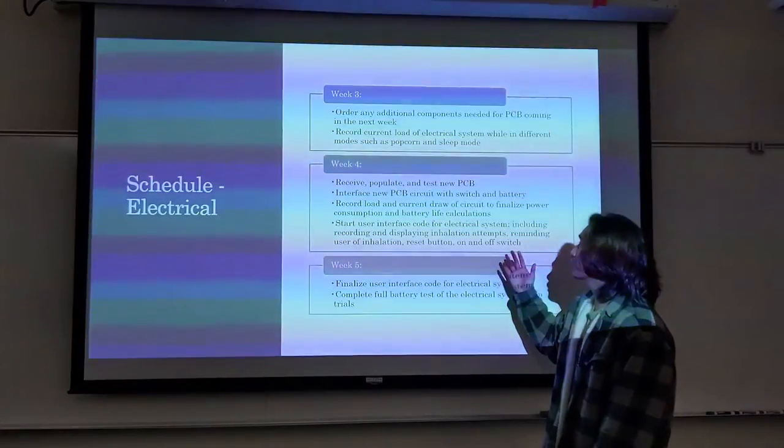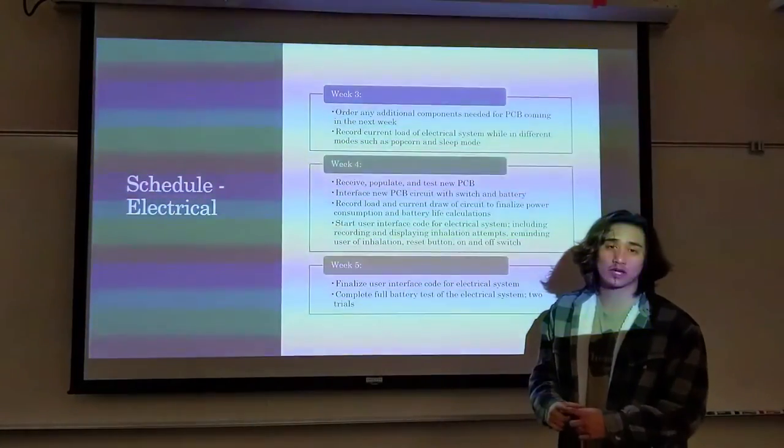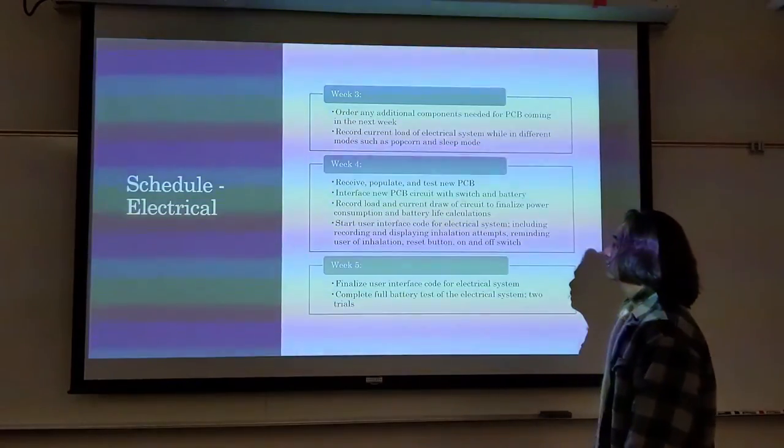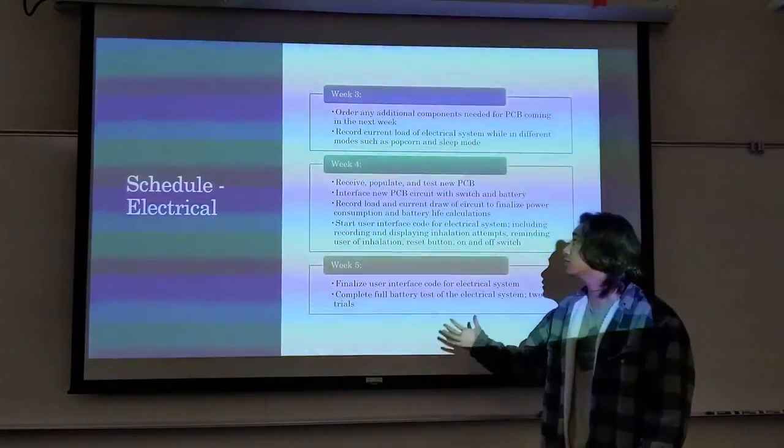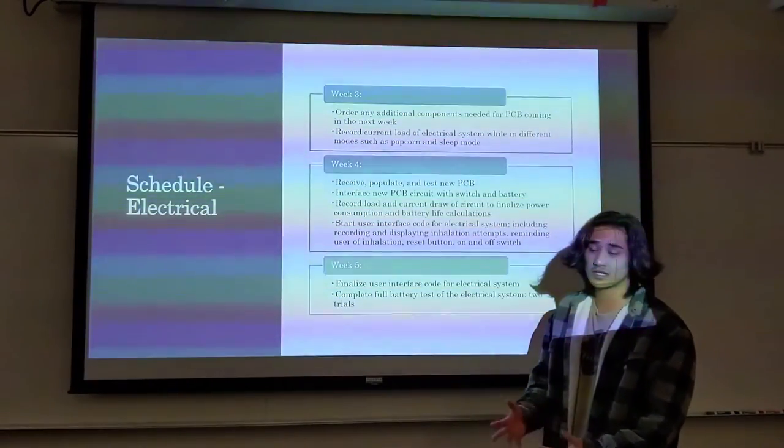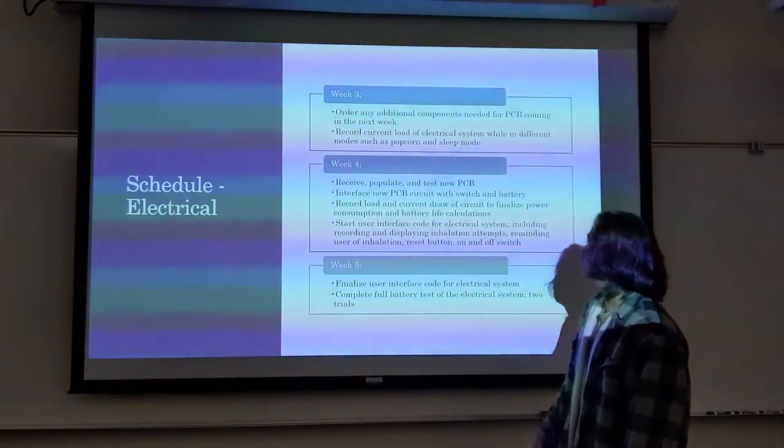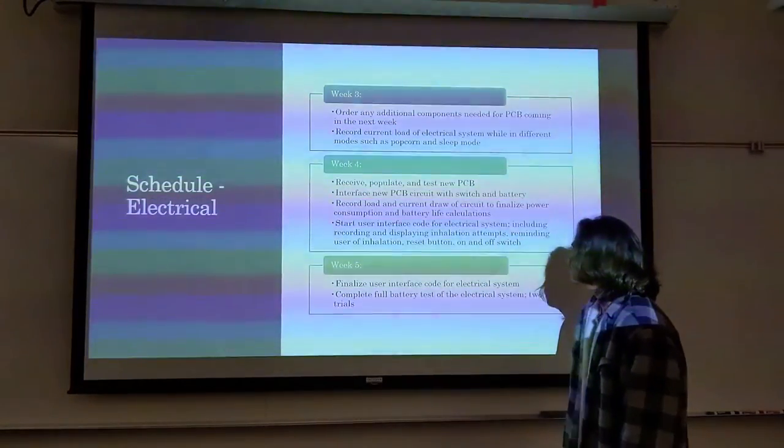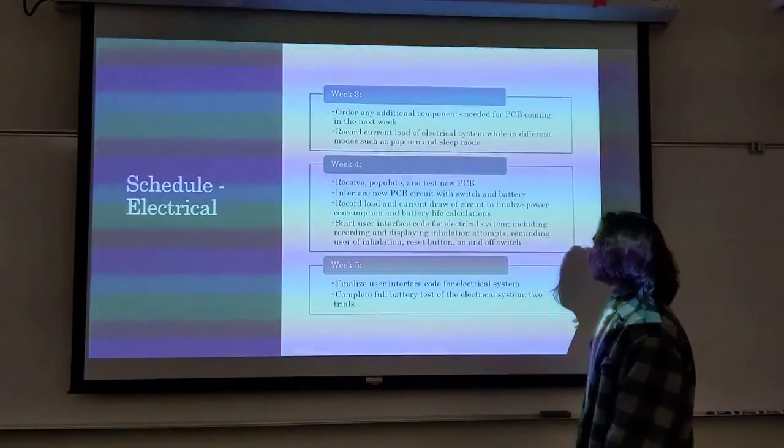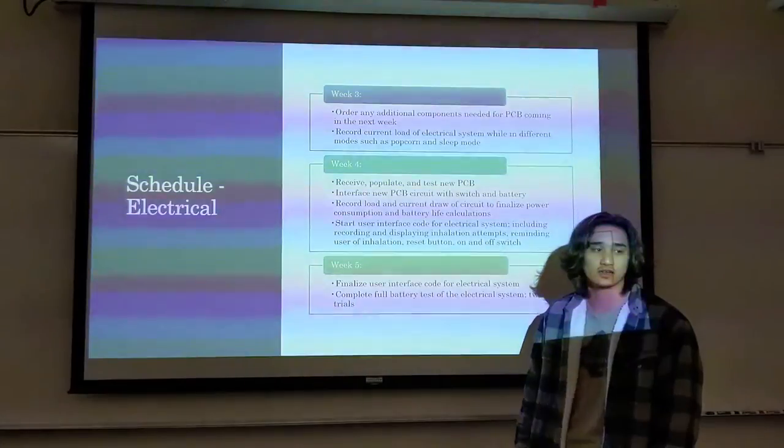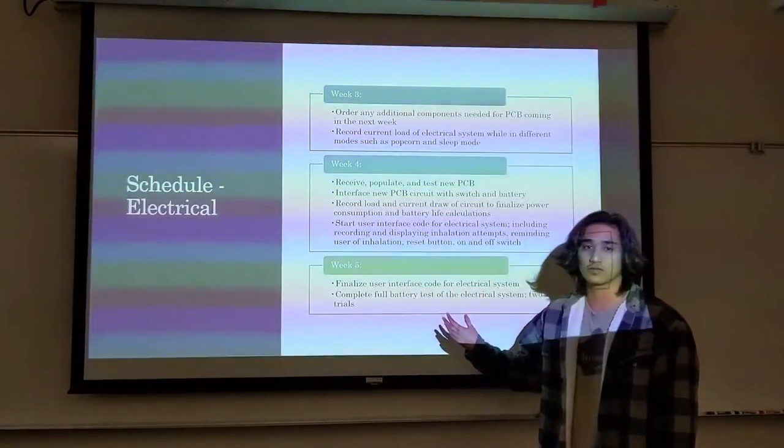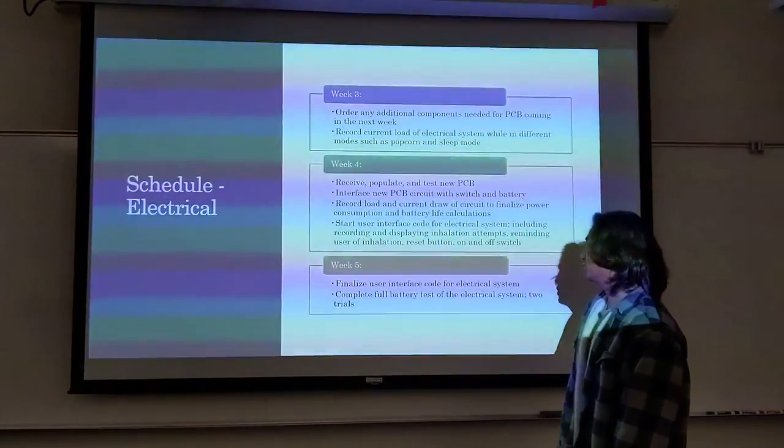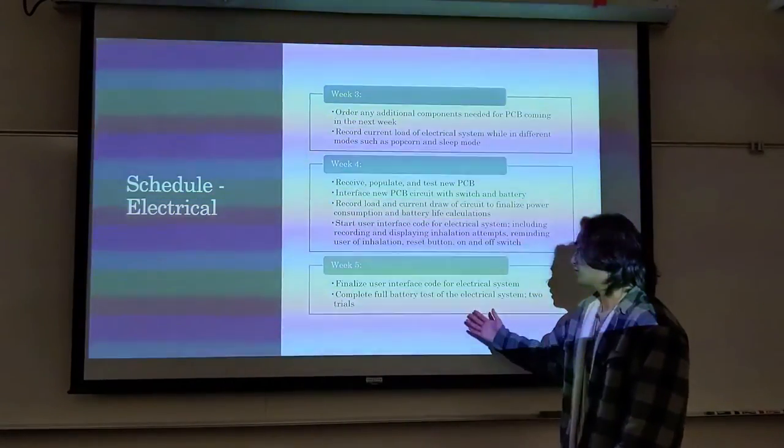We also want to record our current load of the electrical system based on the protoboard that we actually soldered this quarter and get the loads based on the different constant and sleep modes, so we can get a more accurate power consumption number. Throughout the fourth week, we plan to, hopefully we'll get our PCB board by then, so we can start populating it with the components and testing it while it's connected to the battery. We also want to interface it with the switch battery, record the loading current draws of the circuit while it's on the PCB in order to make more accurate battery consumption calculations. We also want to start figuring out the user interface section and how we will be showing the user that they've completed inhalation, and what will happen when they click the reset button. Week five, we want to finalize this user interface and fully have our batteries tested. That is, disconnecting our batteries to the system, letting it fully run and never turning off, so we can see the full hours or full battery capacity being used.